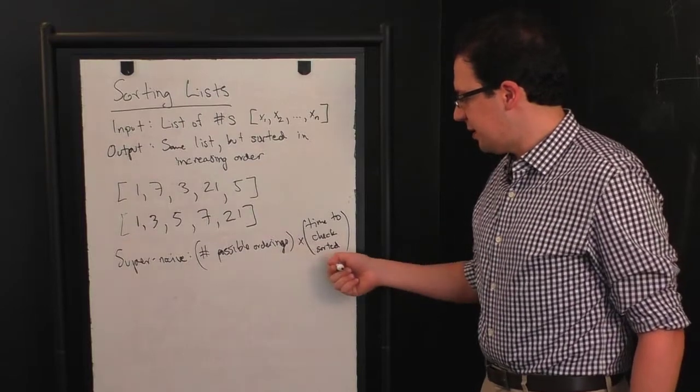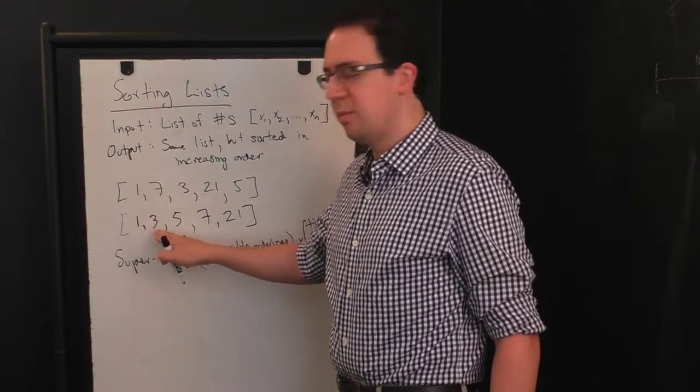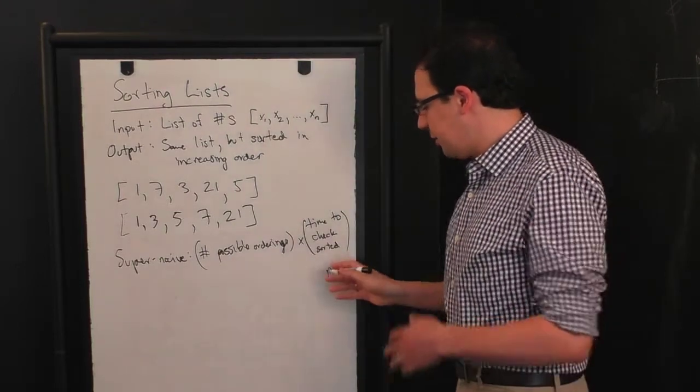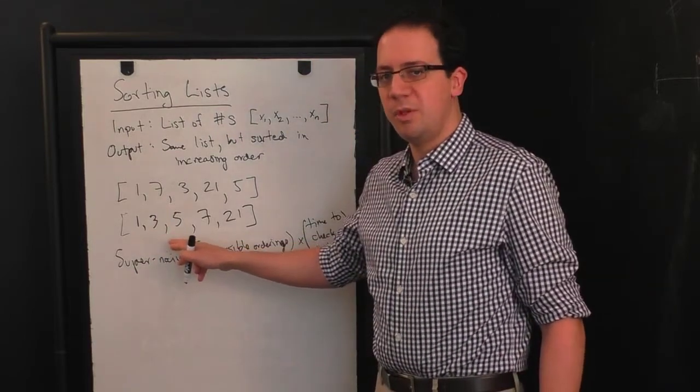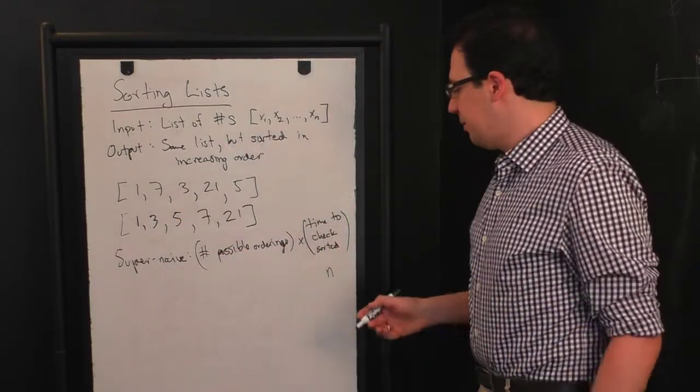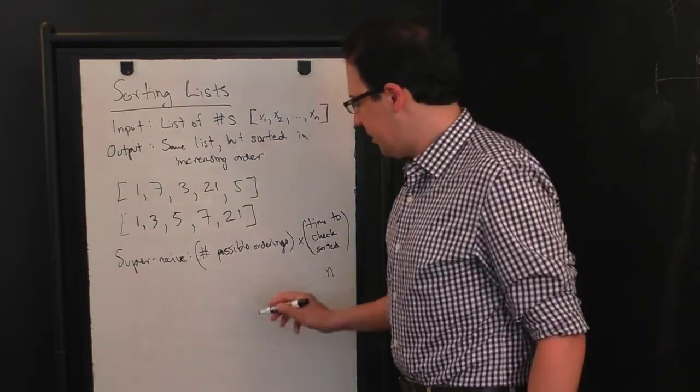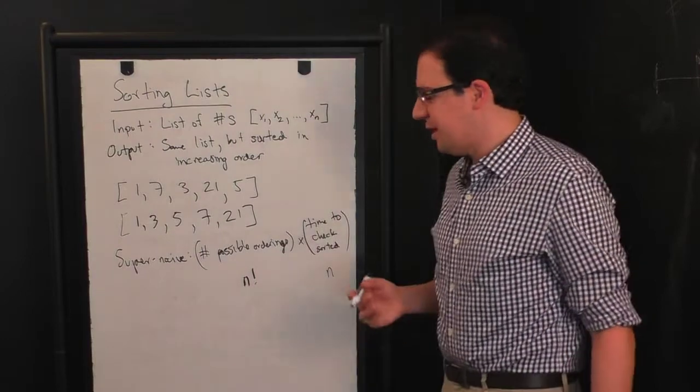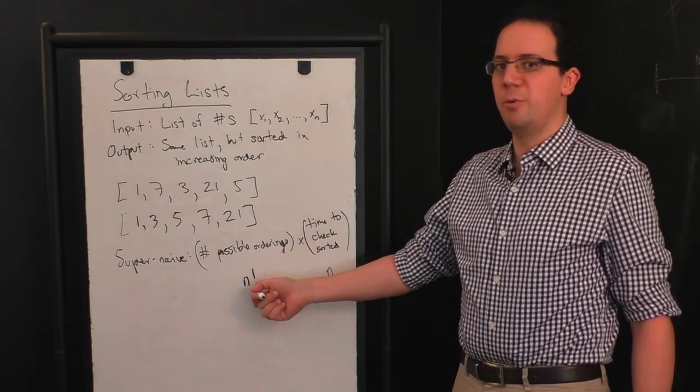So let's just see what these are. The time to check if a list is sorted is, you see, is the first number less than or equal to the second number? Is the second number less than or equal to the third number? And so on. So if your list is length n, the time to check here is essentially n. Now, there might be some constant multiplicative factor here because actually checking if one number is less than another number may not take a single step. It might take a few steps, but it's still going to be some small constant multiple of the length of the list. And the number of possible orderings, this is a classic combinatorial fact. This is n factorial. So the total time for the super naive algorithm is n factorial times n. And as we saw, n factorial is a really bad growth rate.